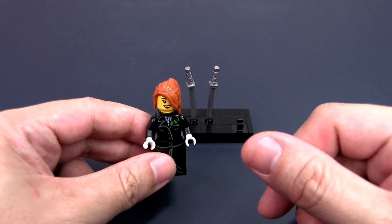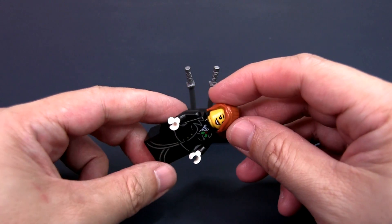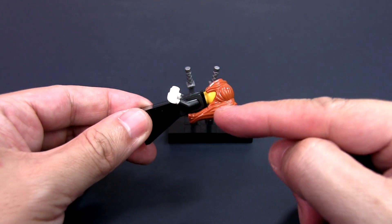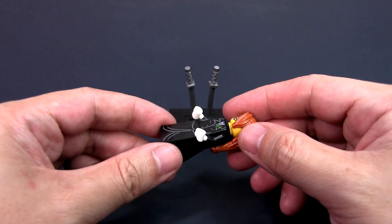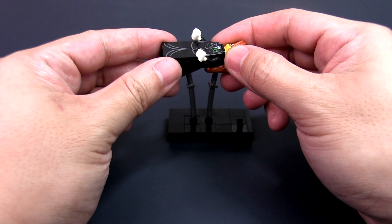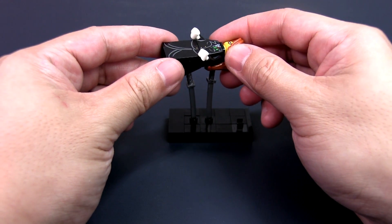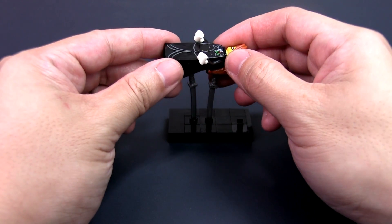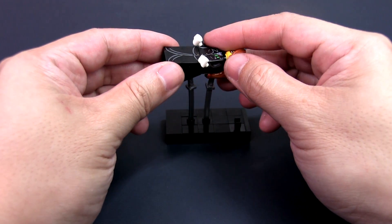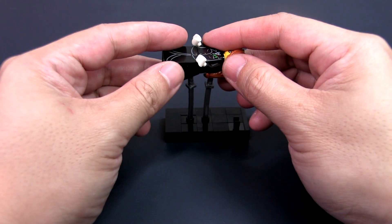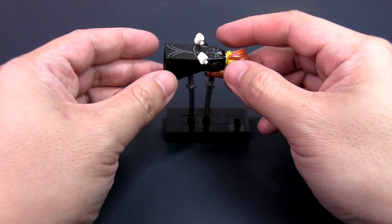You now need to hypnotize the minifig. I can't teach this to you but you can google how to hypnotize a lego minifig. Once she's hypnotized, hold her horizontally and place her onto the ends of the two swords. Of course what you're going to do secretly is to make sure that the end of one sword goes into the secret neck bracket.